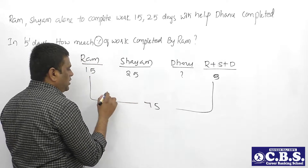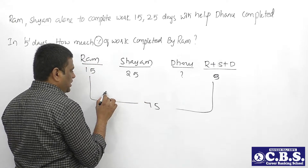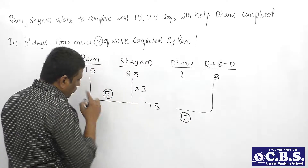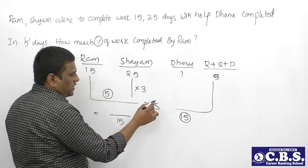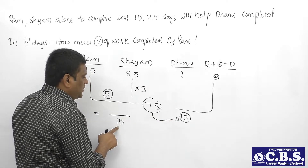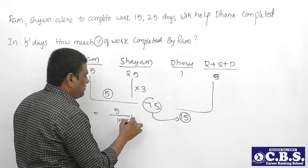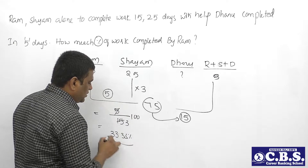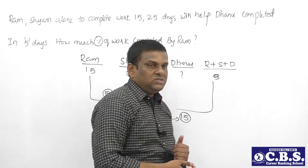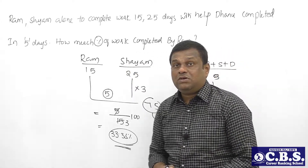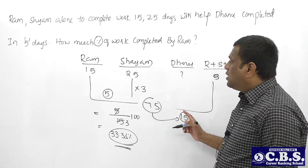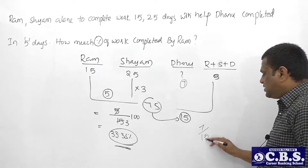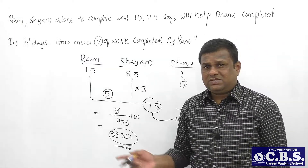Total work = 75 units. Ram's efficiency = 75 ÷ 15 = 5 units per day. Shama's efficiency = 75 ÷ 25 = 3 units per day. All three together complete 75 ÷ 5 = 15 units per day. Ram's share = 5 out of 15 total units per day. Percent of work by Ram = (5 ÷ 15) × 100 = 33.33%. Ram shared 33.33% of the work. For Danu: total per day is 15, Ram + Shama = 5 + 3 = 8, so Danu = 7. Danu's percent = (7/15) × 100 ≈ 46.67%.